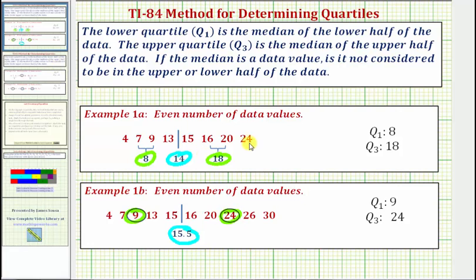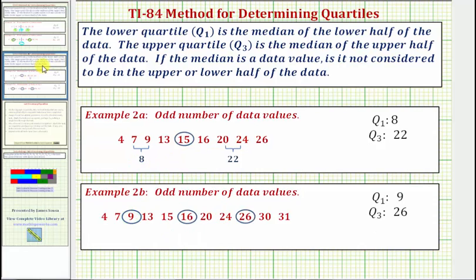Now let's look at two examples where we have an odd number of data values. Because we have an odd number of data values, notice how the median is a data value, both here and here. So the TI does not consider it in the upper or lower half. Therefore, Q1 is going to be the mean or average of 7 and 9, which is 8, and Q3 is going to be the average of 20 and 24, which is 22. Here though, because we have an odd number of data values in the lower and upper half, Q1 is 9 and Q3 is 26.